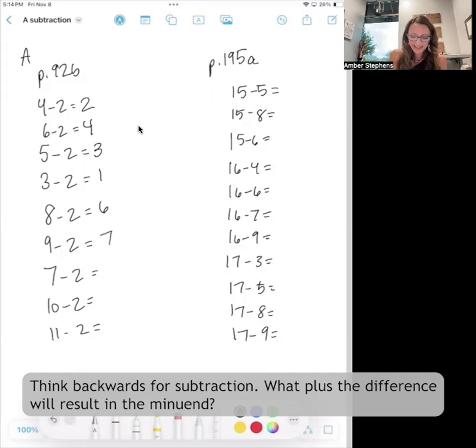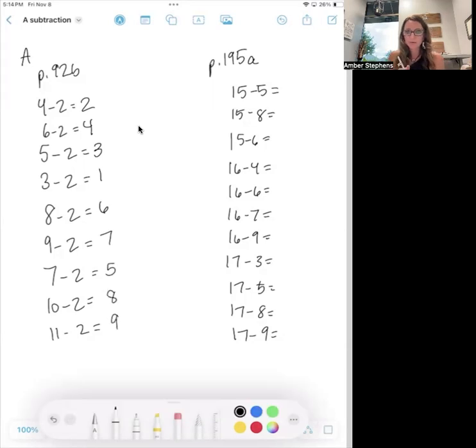That's how we're doing the example on page 92 on the left. On page 195, at the very end of the Level A subtraction, we're just kind of thinking the same idea.